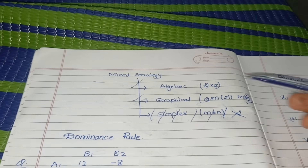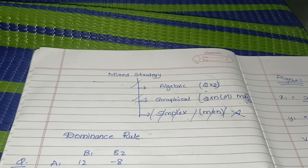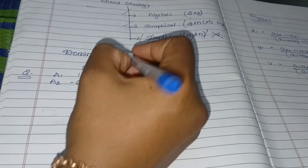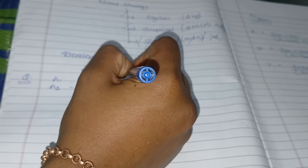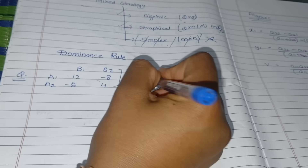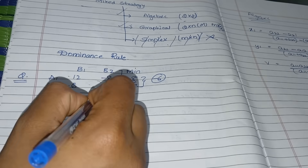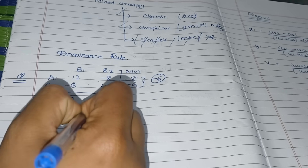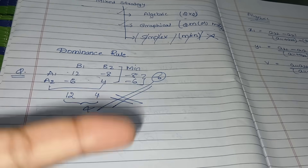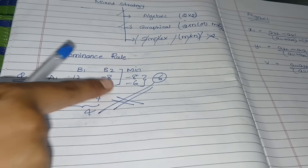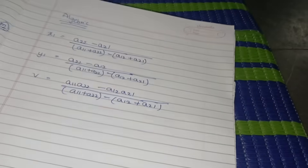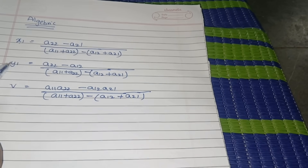For the algebraic method, there must be two rows and two columns. First, check the saddle point. For the example question, the row minimums are -8 and -6; the maximum of those is -6. The column maximums are 12 and 4; the minimum of those is 4. Since -6 does not equal 4, there is no saddle point. Since it is a 2x2 matrix with no saddle point, we can use the algebraic method.